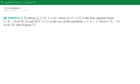All right guys, we're going to do example 4 from chapter 16.2. Example 4 says evaluate the line integral y squared dx plus x dy where the curve c is 2 segments. C1 is a line segment from negative 5, negative 3 to 0, 2 and curve 2 is the arc of a parabola x equals 4 minus y squared from negative 5, negative 3 to 0, 2.